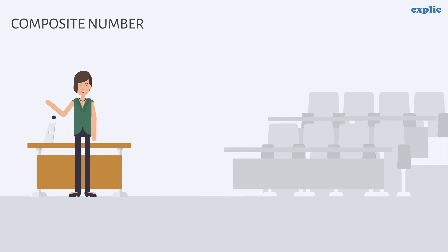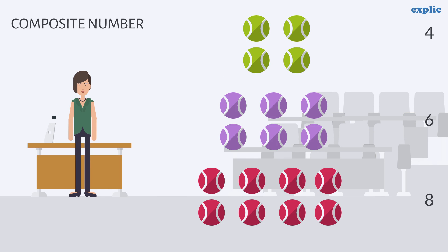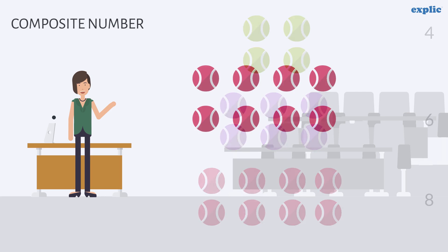The number which can be arranged in a rectangle or a square is called composite numbers. For example, 4, 6 and 8. A composite number can be divided evenly.